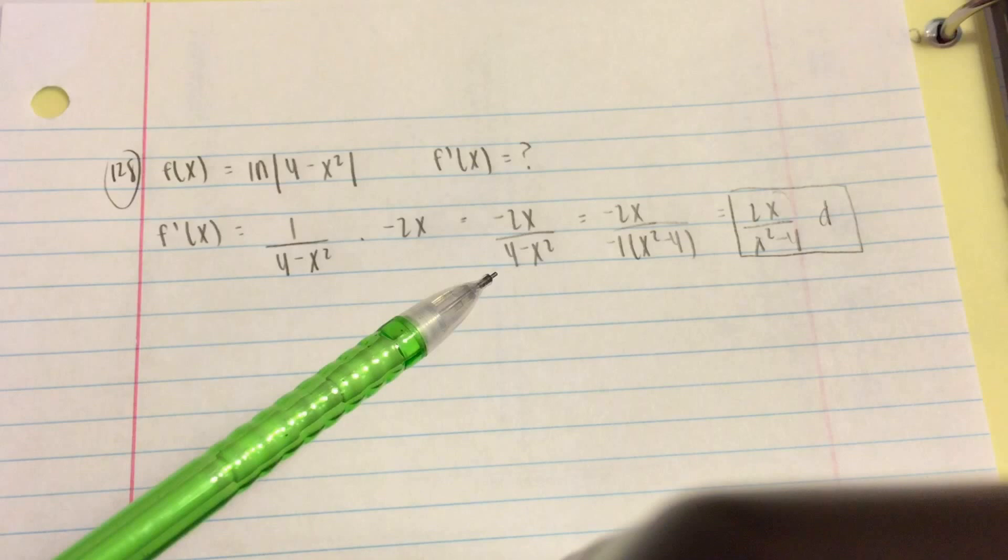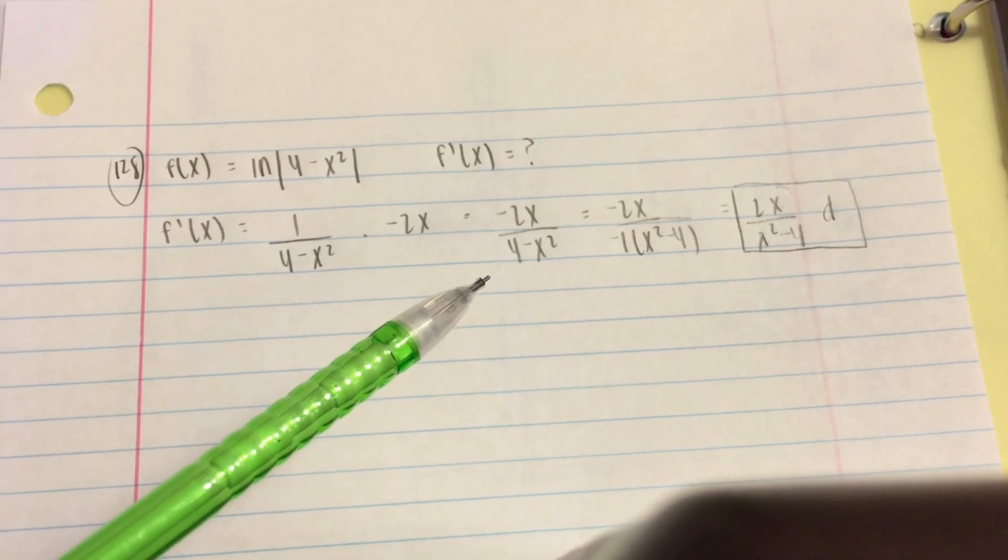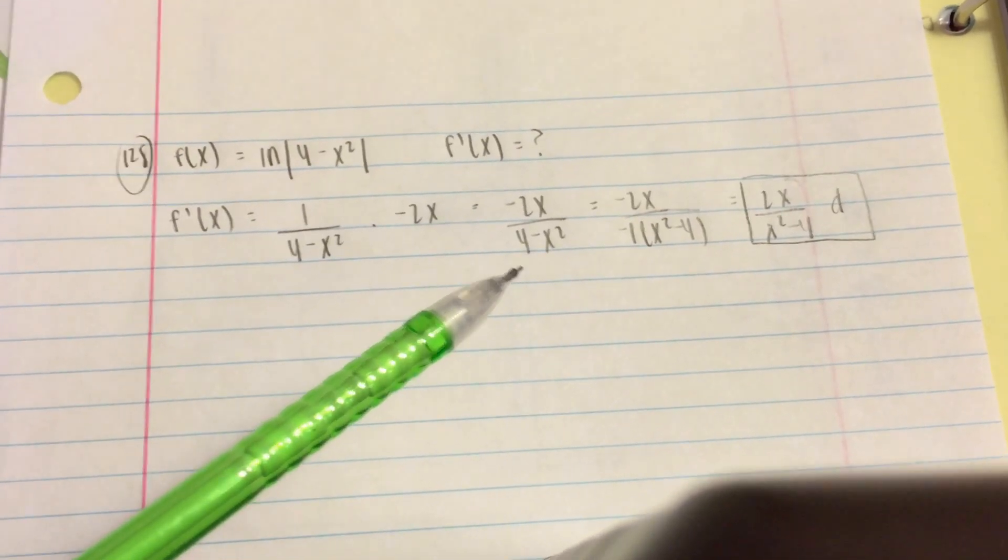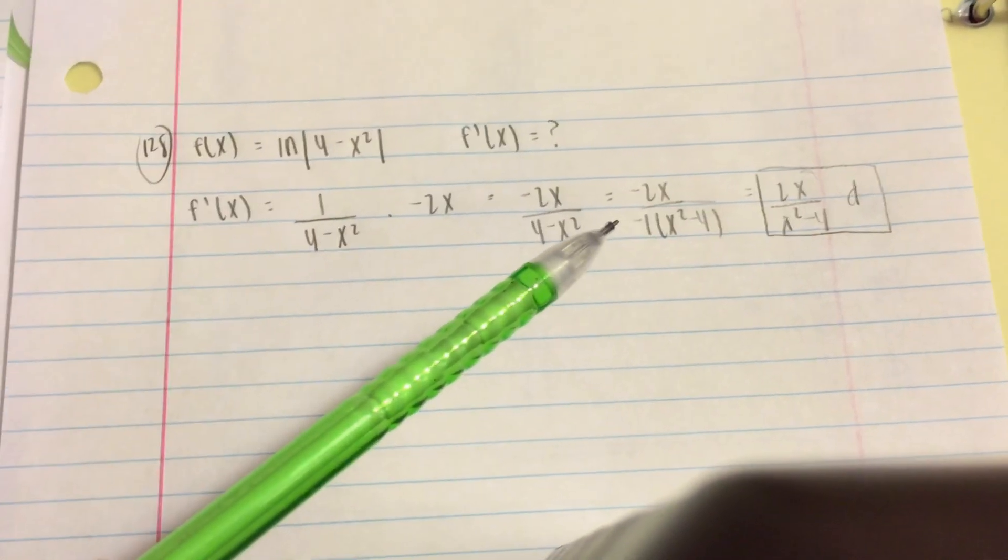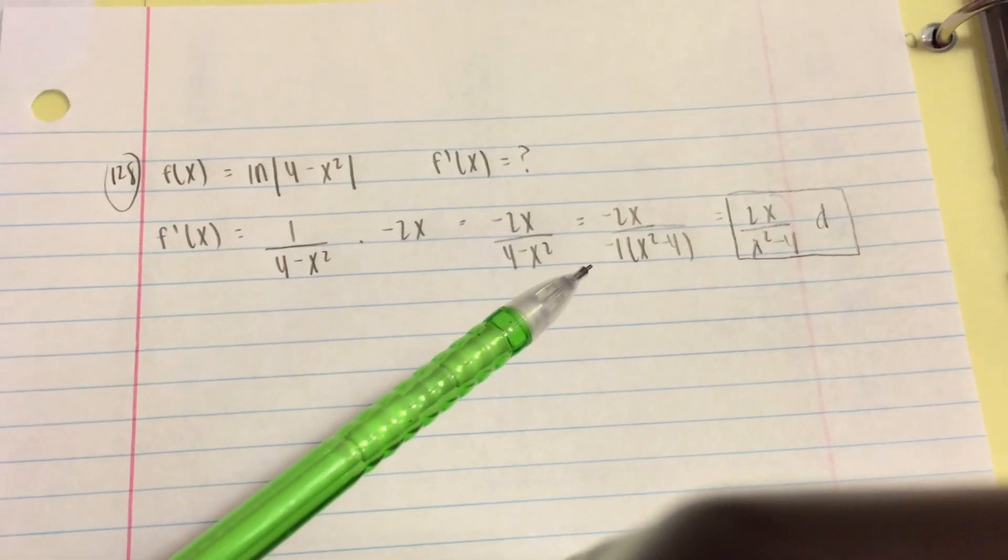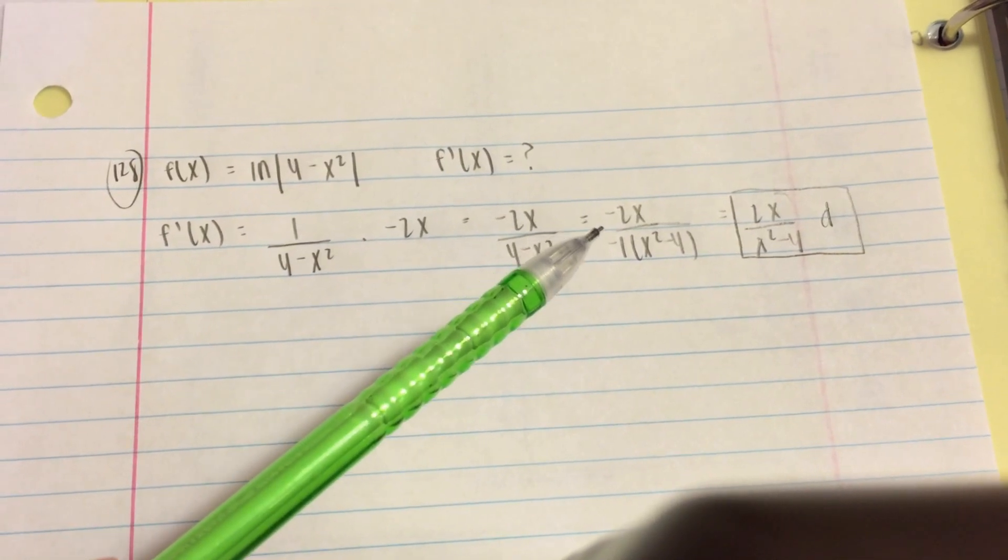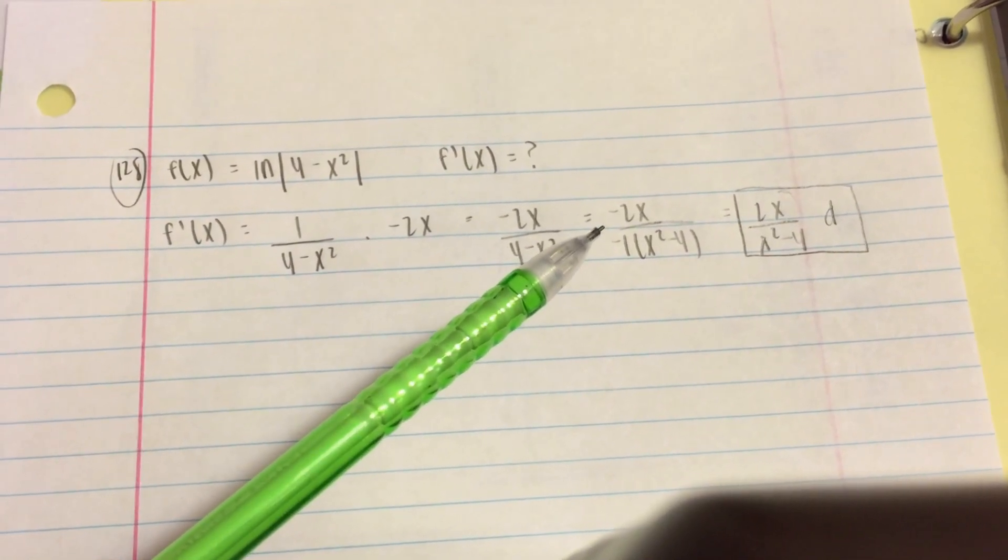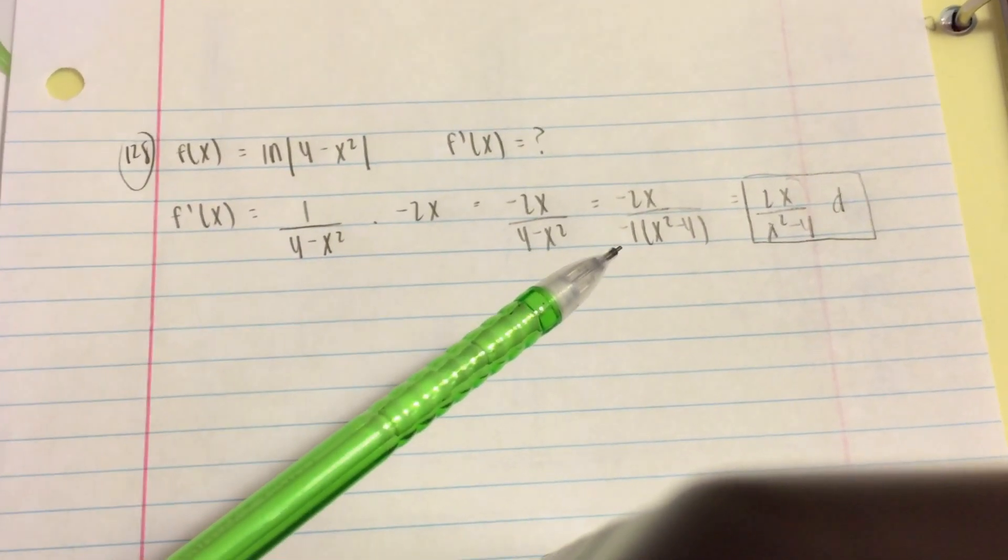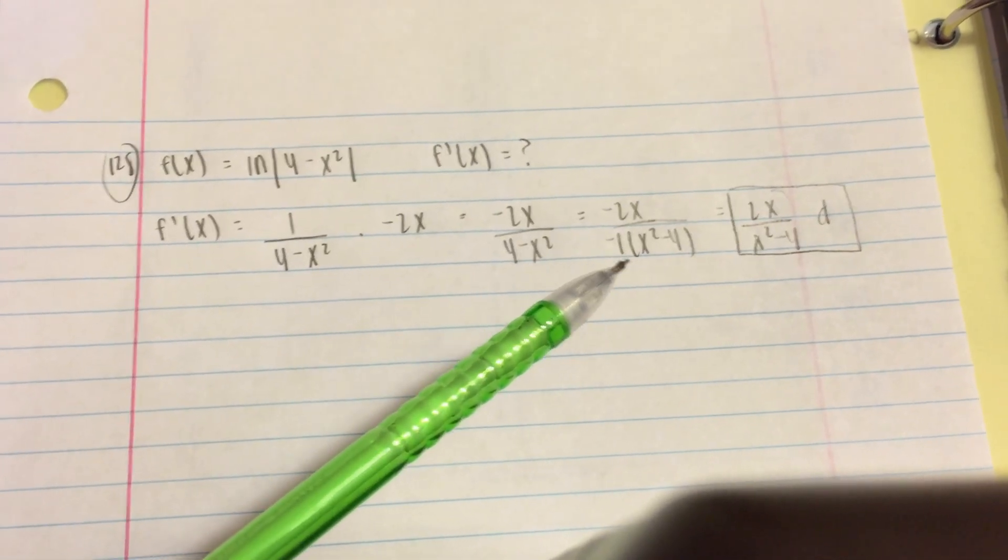So far, we don't see a matching answer choice, so we have to simplify more. We factor out a -1 from the denominator and get -2x/[-1(x² - 4)].